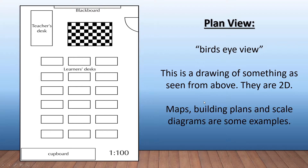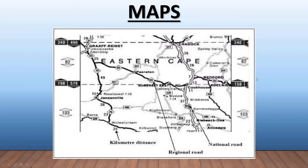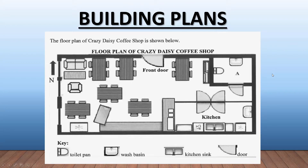Here we have a typical map — again a top-down view as seen from above. We also have building plans; here you can see a coffee shop where the roof has been taken off and we are looking at it from above. Note that with maps or building plans, you'll often have keys at the bottom so you can understand what you're looking at. For example, we can identify a front door, a kitchen door, and by checking the key we can see that's a toilet and that's a wash basin — so obviously this is the bathroom.